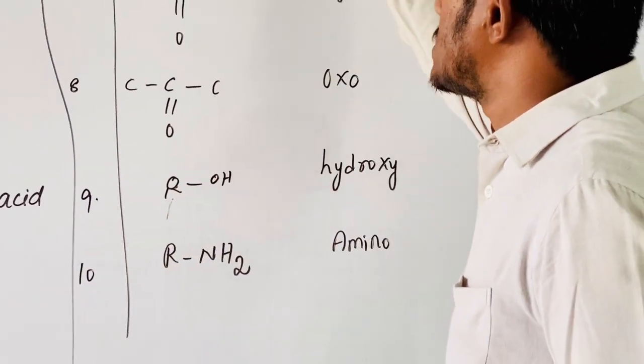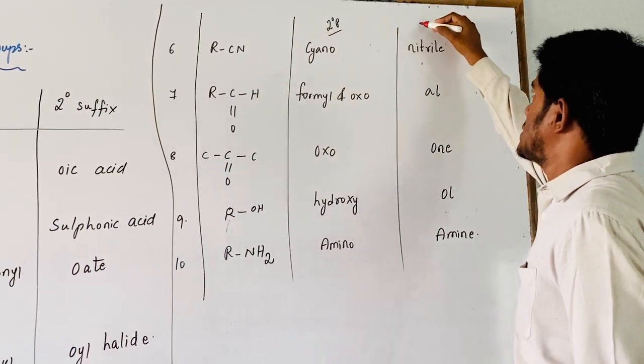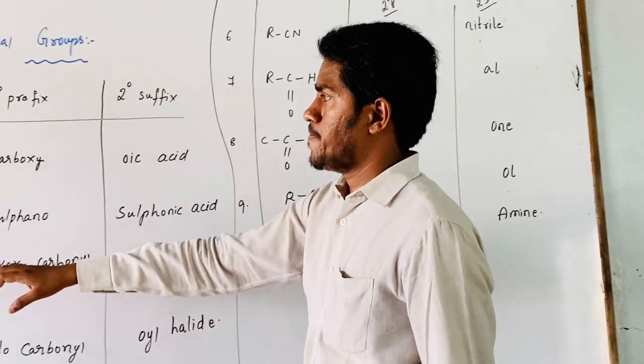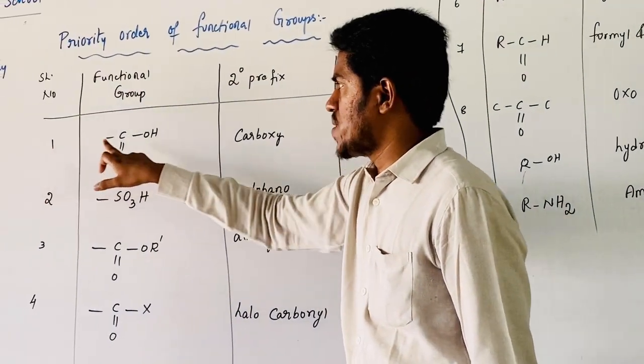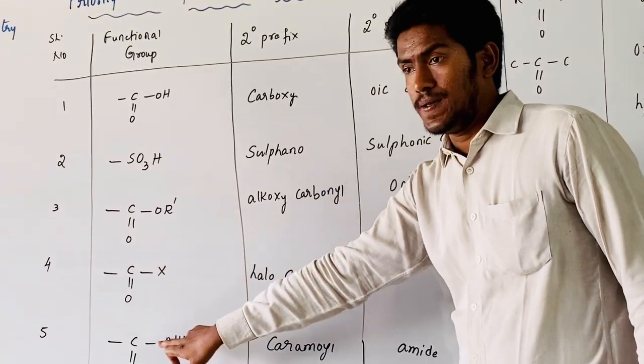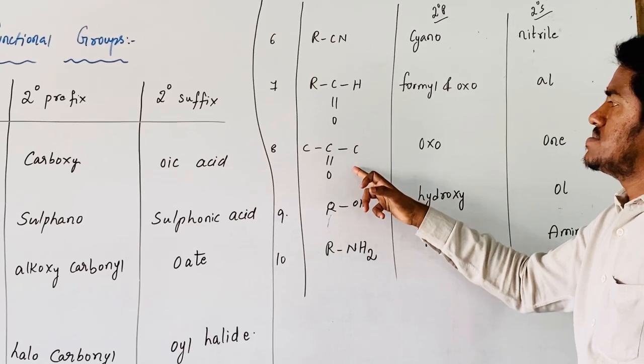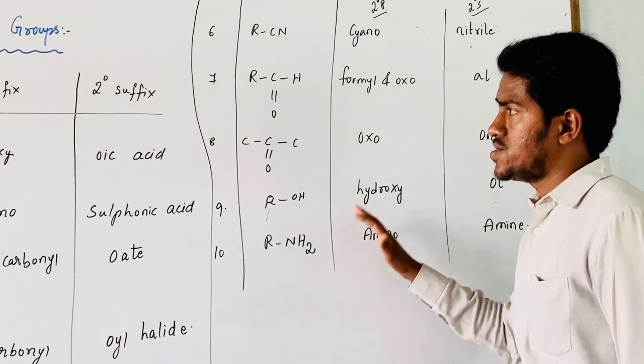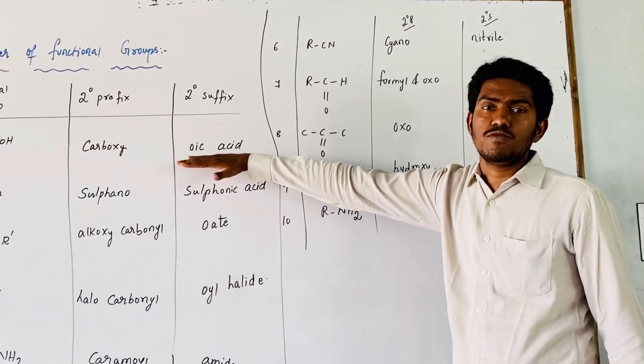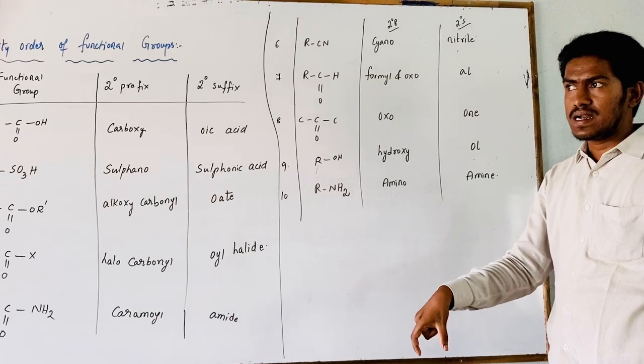First column represents serial number, second one functional group, third one secondary prefix, and the last column is secondary suffix. Now the priority order follows this rule compulsorily. First priority goes to carboxylic acid, second priority to sulfonic acid, and the remaining are acid derivatives: ester, acyl halide, amide, nitrile, aldehyde, ketone, alcohol, and amine. This is the priority order of functional groups. Highest priority can get minimum number of carbon atoms, minimum position of carbon atoms, nothing but lowest locant of that carbon atom in the main skeleton of main chain.